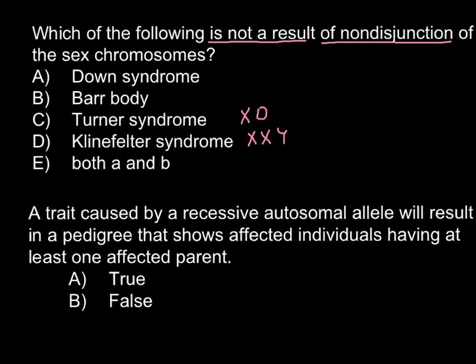So answer B would be our answer here. The last choice is answer A — Down syndrome. Down syndrome is due to non-disjunction of chromosome pair 21. There would be three chromosomes present in pair 21, and we call this condition Down syndrome. This would also be a correct answer because the sex chromosome pair is number 23. So we have two correct answers here, and the correct answer would be both A and B.